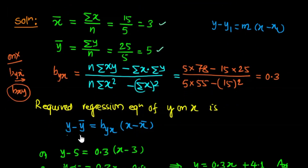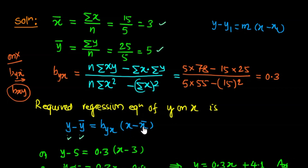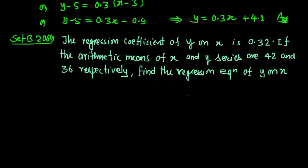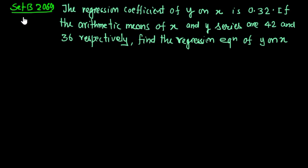The formula for regression equation of x on y is: x minus x bar equals b_xy times bracket y minus y bar. Here b_xy is the regression coefficient of x on y. This gives the regression equation of x on y.